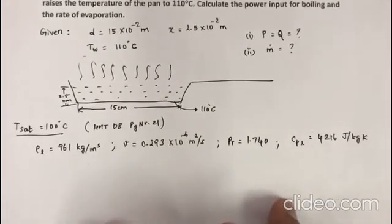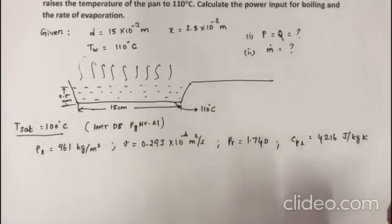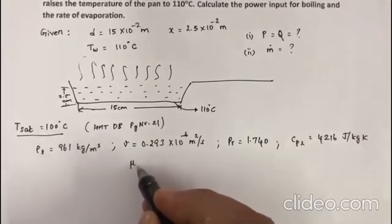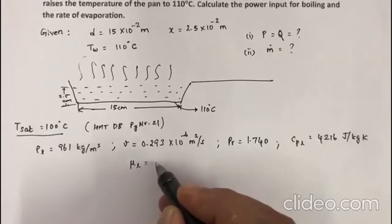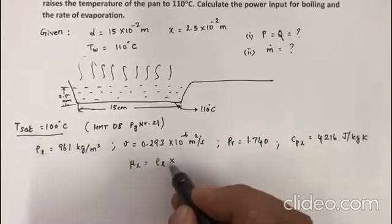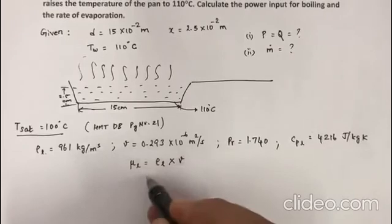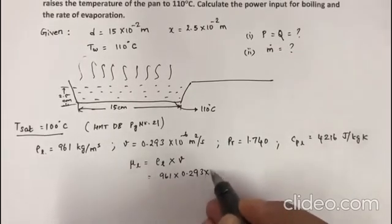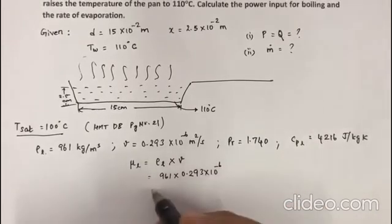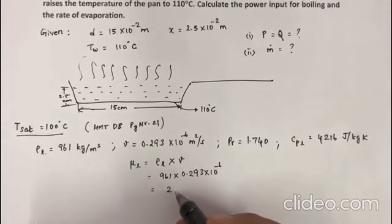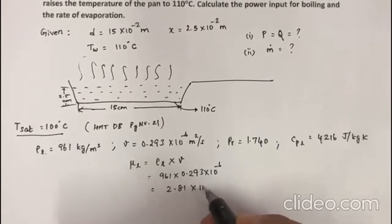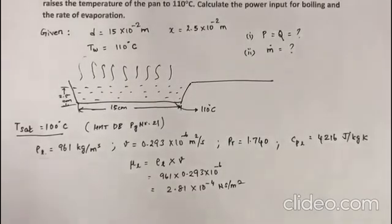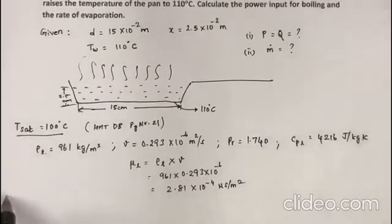Now we have these values from the data book. You need another data which is the dynamic viscosity of the liquid, which can be gotten by multiplying this density with the kinematic viscosity: μl = 961 × 0.293 × 10⁻⁶ = 2.81 × 10⁻⁴ N·s/m².